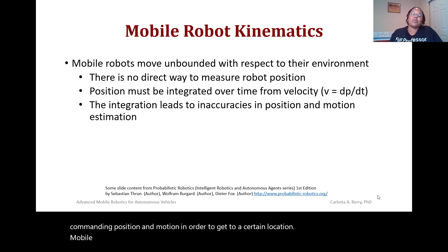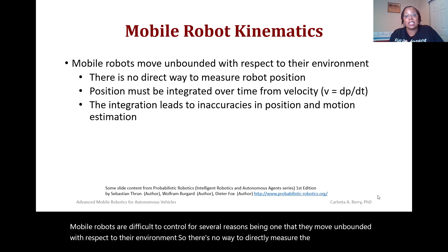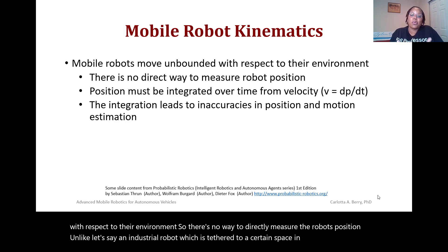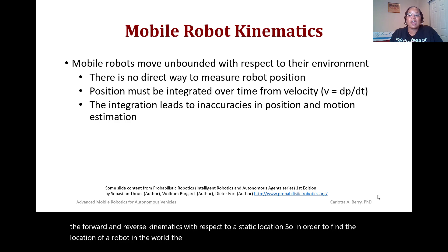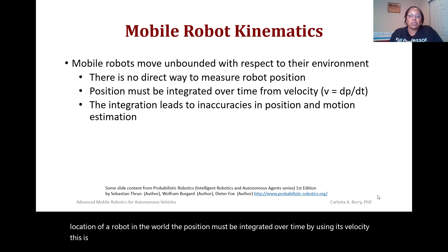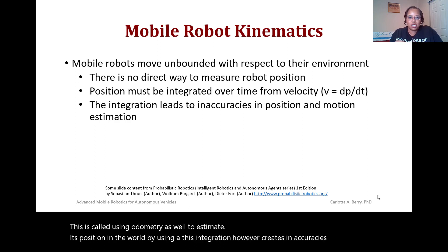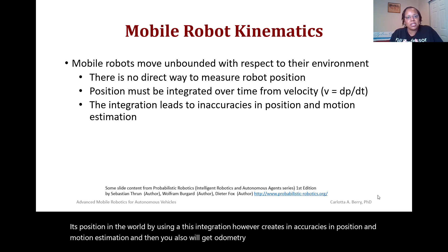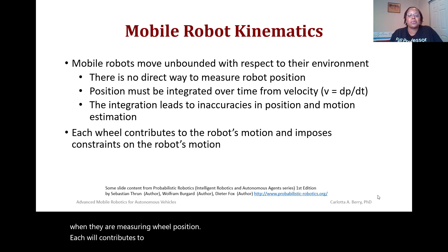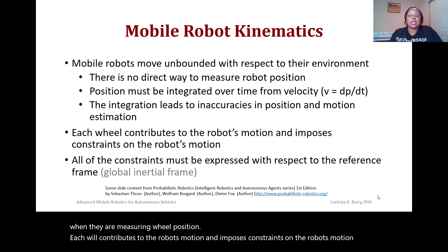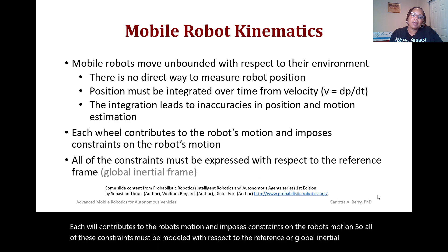Mobile robots are difficult to control for several reasons. They move unbounded with respect to the environment, so there's no way to directly measure the robot's position, unlike an industrial robot which is tethered to a certain space. To find the location of a robot in the world, the position must be integrated over time using its velocity — this is called odometry. This integration creates inaccuracies in position and motion estimation, and odometry error can also come from slippage or encoders that may not be as discrete as needed. Each wheel contributes to and imposes constraints on the robot's motion, and all constraints must be modeled with respect to the global inertial frame.